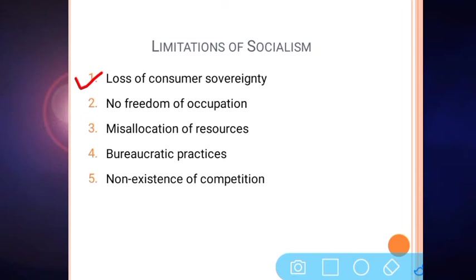The first limitation faced by customers or industries in socialism is loss of consumer sovereignty — that is, the customer does not have any power in socialism. In general life, we often hear that the customer is the king of the market, meaning whatever is demanded by the customer is produced by the manufacturer, and the aim of the manufacturer is to fulfill the customer's needs and preferences.